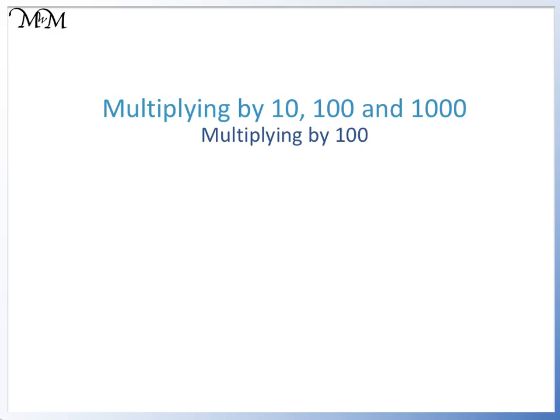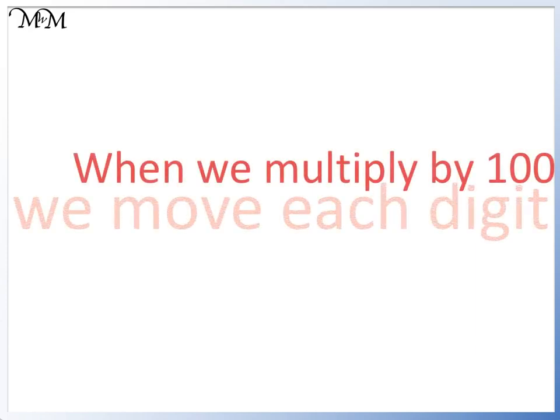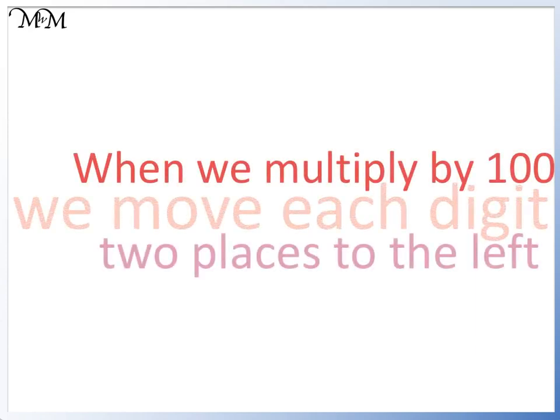Hi and welcome to our lesson on multiplying by 10, 100 and 1000. In this lesson we will be looking at multiplying by 100. When we multiply by 100, we move each digit two places to the left.